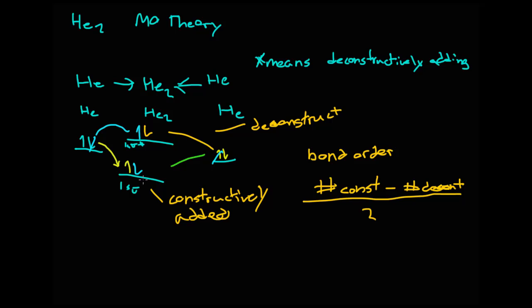We can see here that we have one constructively added, so this is two electrons merging two orbitals, that's two, minus the number of deconstructively added orbitals, which is again two. We divide that by two, and we get zero divided by two, and the bond order will just be zero.